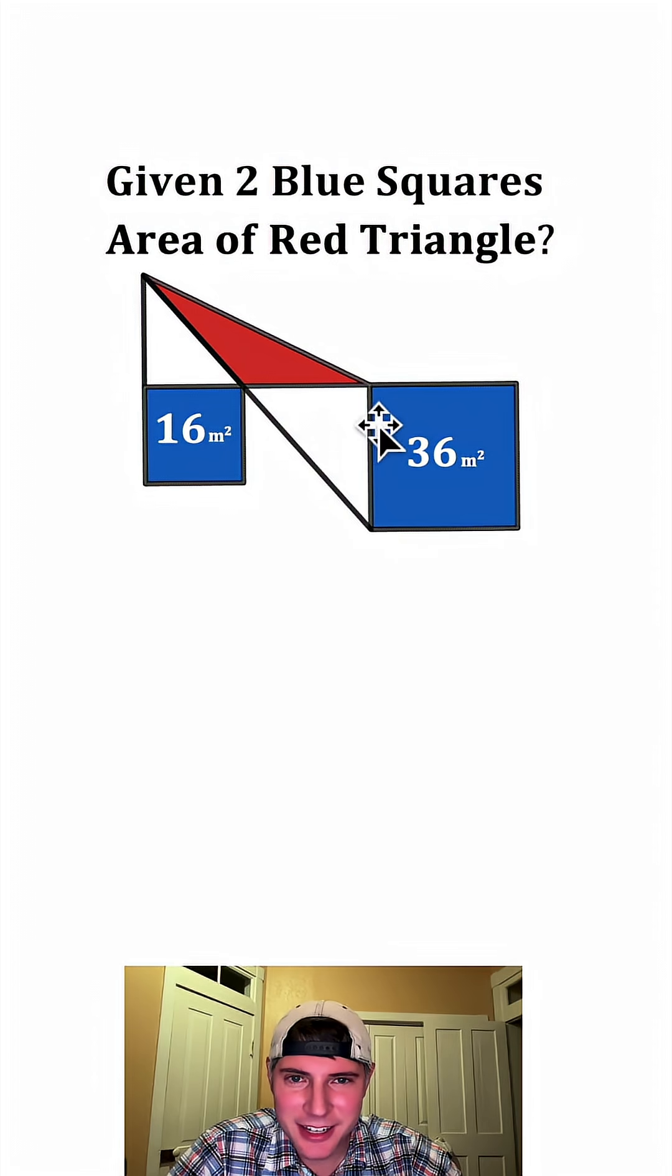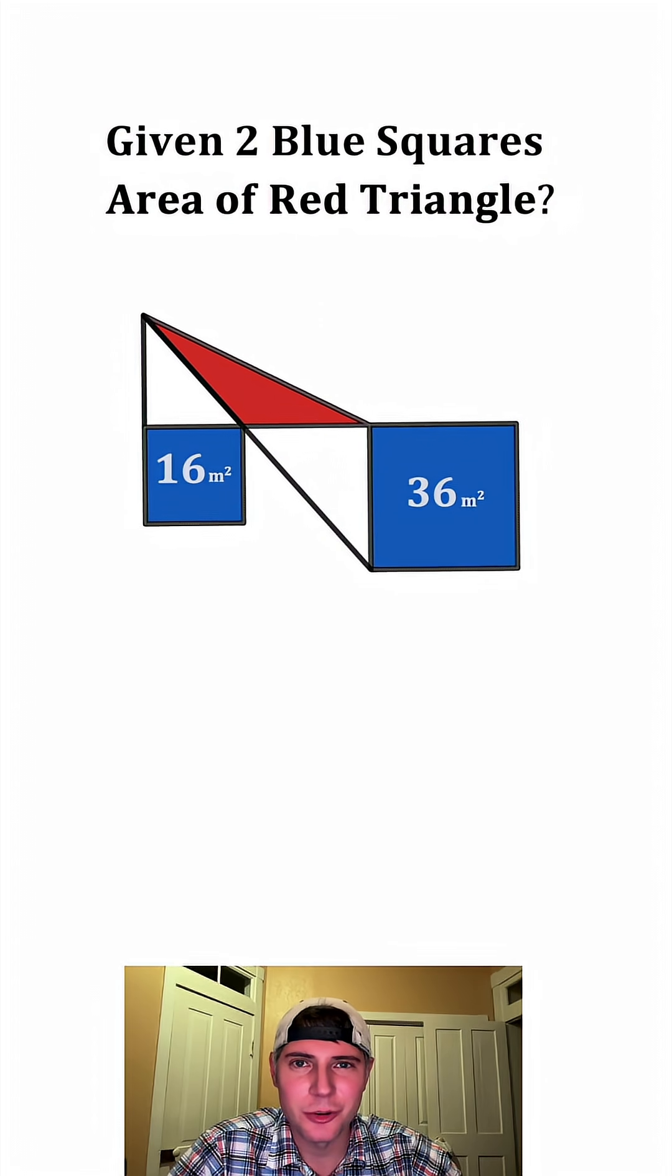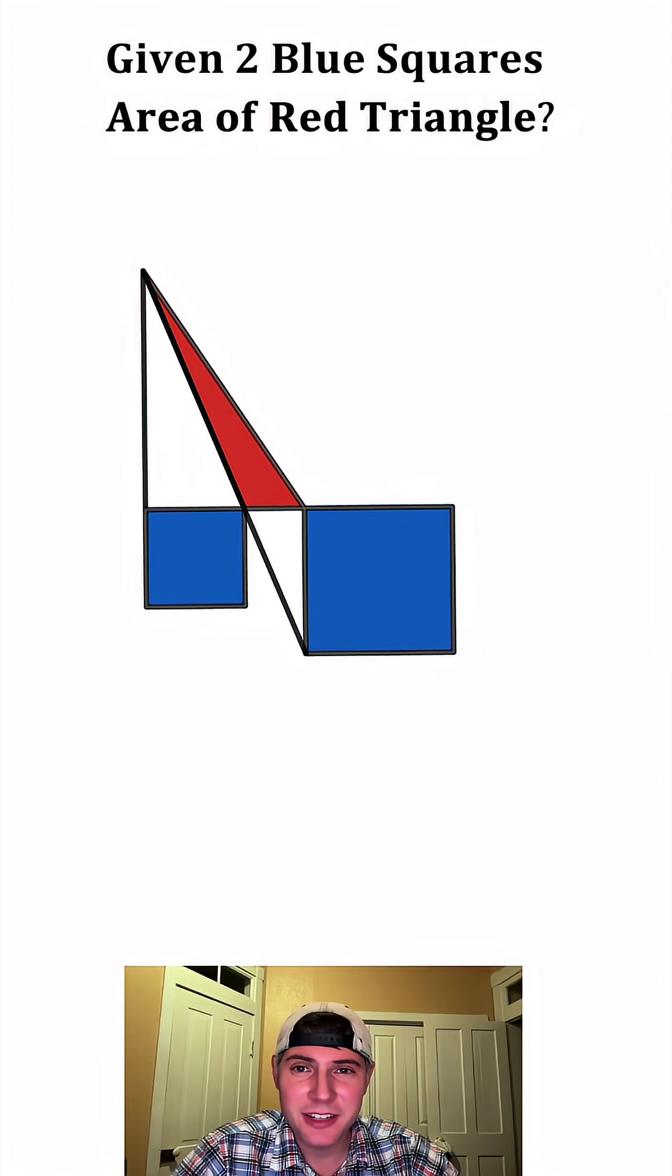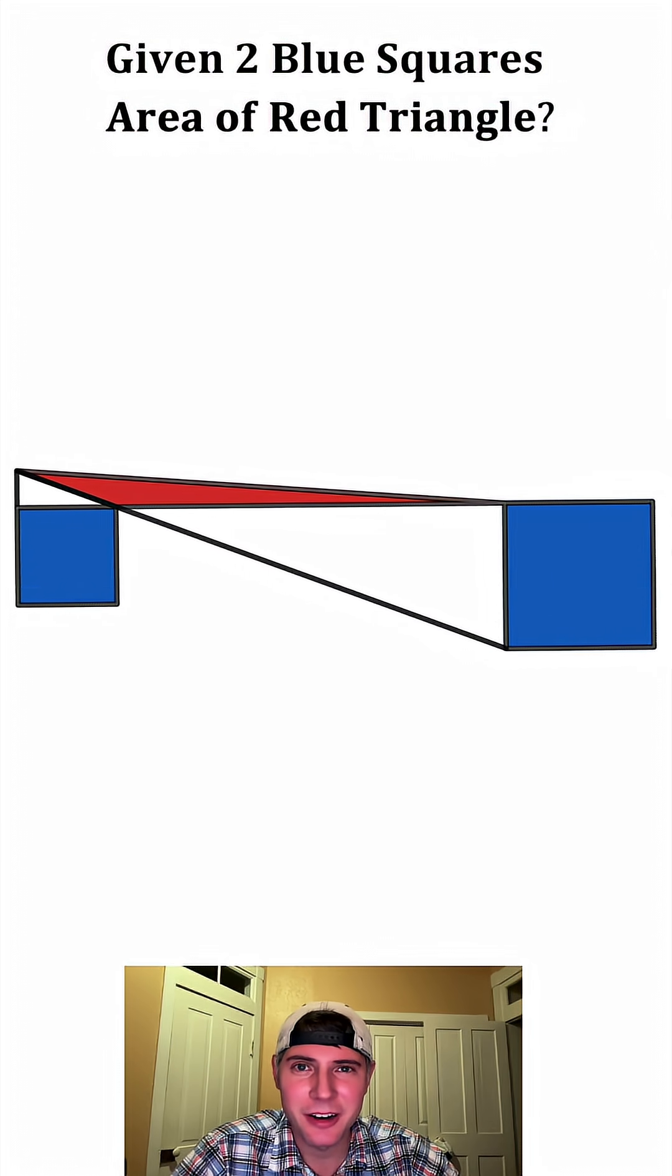I'm noticing something - it's not giving us anything about the distance between the two squares. So it could realistically be any one of these scenarios. So I'm guessing every single one of these red triangles have the exact same area.